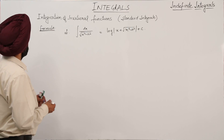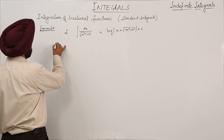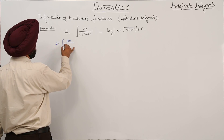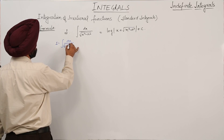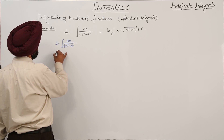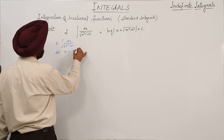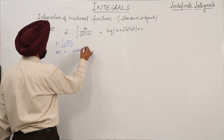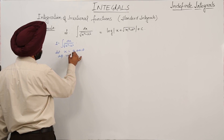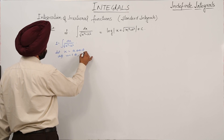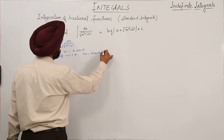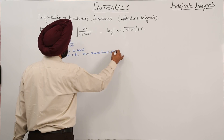Evaluating the second formula now. Here we have integration I equal to dx upon square root of x squared minus a squared. Now let x equal to a sec θ. Differentiating with respect to θ, we have dx equal to a sec θ tan θ dθ.